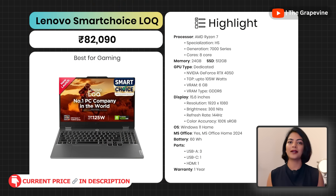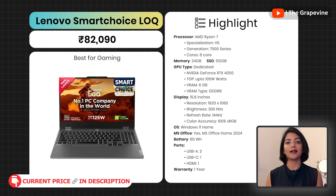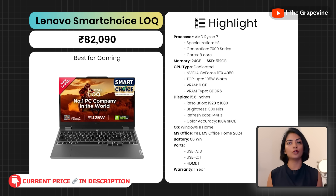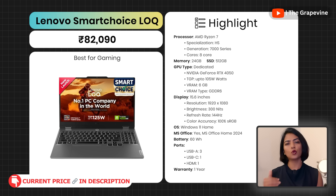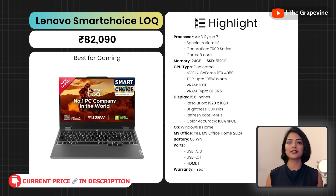Under 1 lakh, my last recommendation is the Lenovo Smart Choice LOQ — I also recommended this for the creative use case. This has a powerful RTX 4050 GPU with 6GB VRAM and a 105W TGP, allowing the GPU to run with good power. This is paired with an AMD Ryzen 7 HS processor with 24GB DDR5 RAM and 512GB storage — together more than adequate for this use case. It also has a hyperchamber thermal design for cooling during intense gaming sessions. With a large 15.6-inch display and 100% sRGB color accuracy, this laptop is not just for gaming but also for editing.